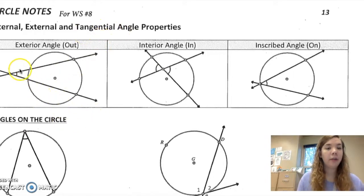So exterior angles mean they're on the outside of the circle. Interior means that they are inside the circle. And then inscribed means they're right on the edge.